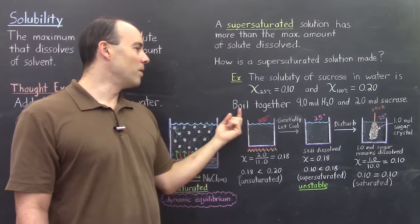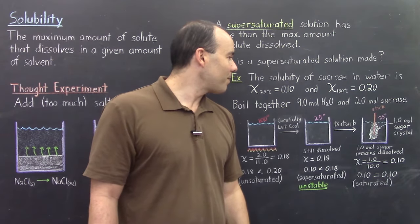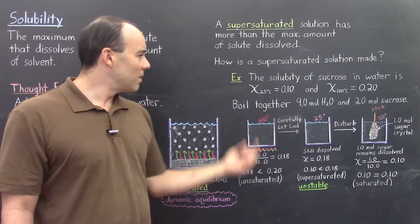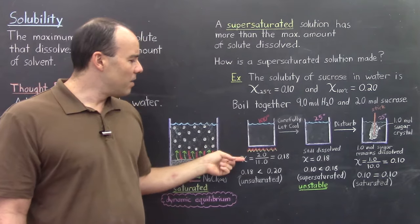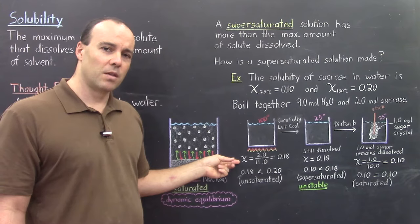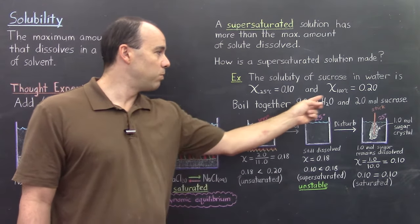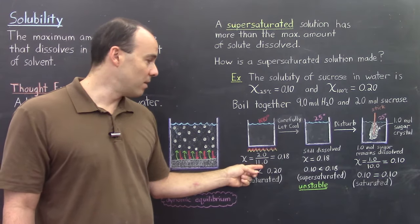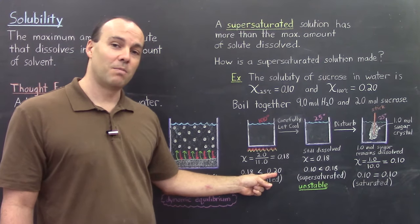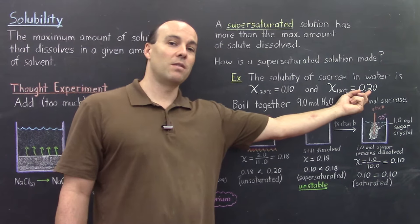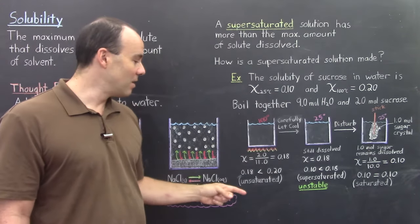So what we can do is boil together 9 moles of water and 2 moles of sucrose. If we boil these things together, the solution will be pretty close to 100°C, the boiling temperature of water. The mole fraction of sucrose in this solution is 2 moles of sucrose over the total number of moles, which is 2 plus 9 = 11. So 2 over 11 gives a mole fraction of 0.18. This mole fraction is less than the limiting solubility — at 100°C we're able to achieve a mole fraction of 0.2 — so this solution is still unsaturated, almost there but not quite.